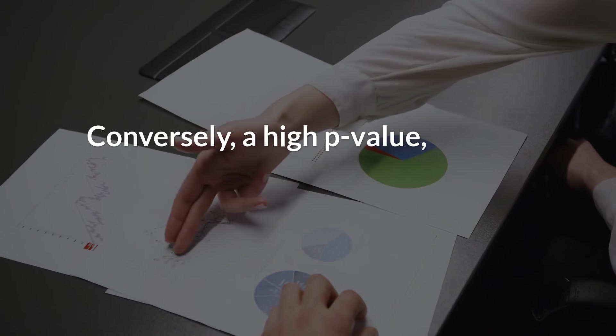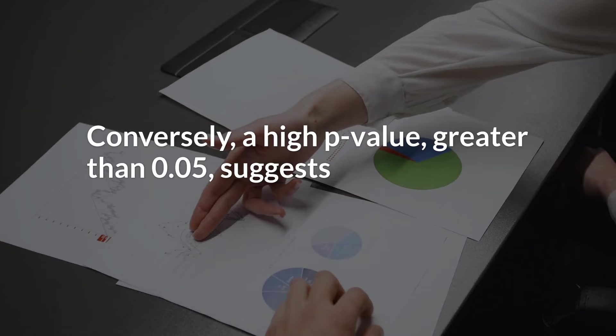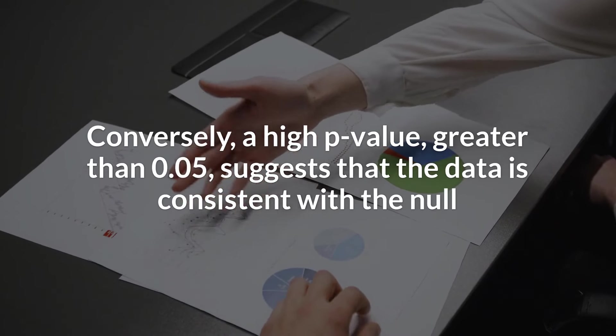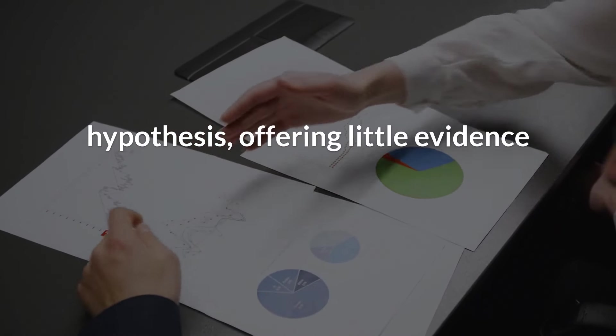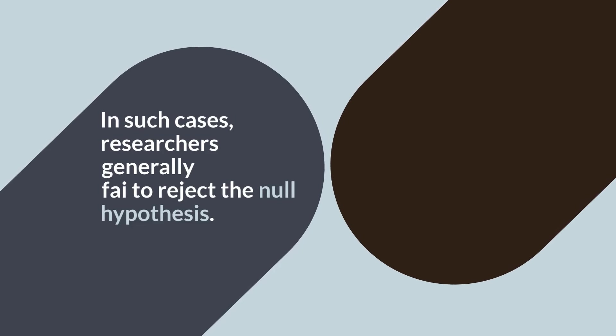Conversely, a high p-value, greater than 0.05, suggests that the data is consistent with the null hypothesis, offering little evidence against it. In such cases, researchers generally fail to reject the null hypothesis.